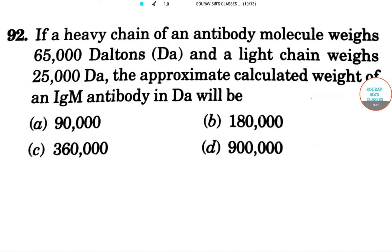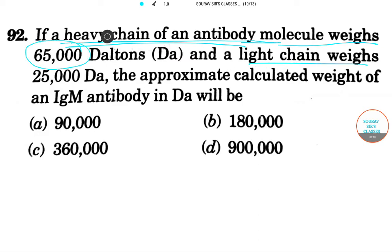Hello students, welcome to Shorav Sir Classes. This question is about immunoglobulin structure. Here, the heavy chain of an antibody molecule weighs 65,000 Daltons, and the light chain weighs 25,000 Daltons. Now, we need to find the approximate calculated weight of an IgM antibody.